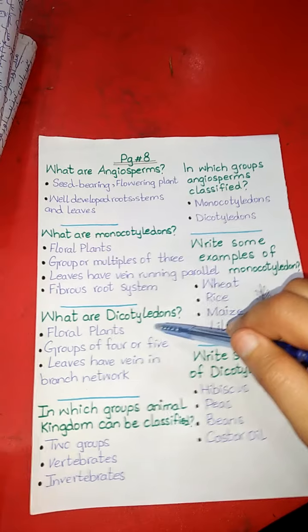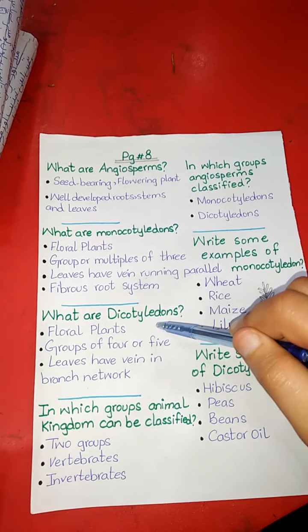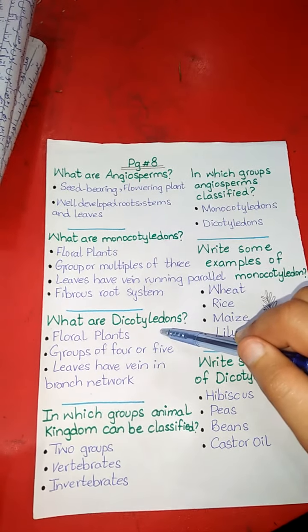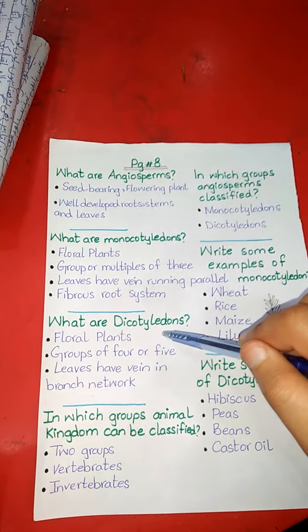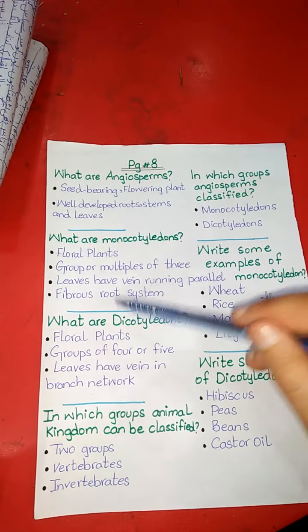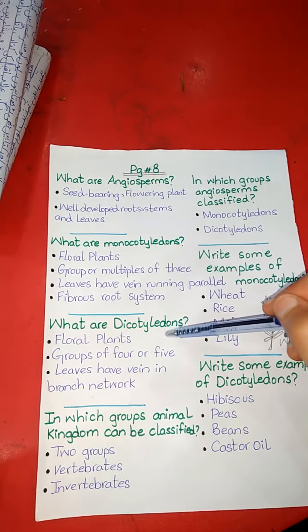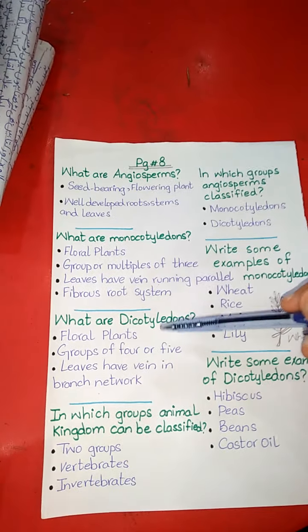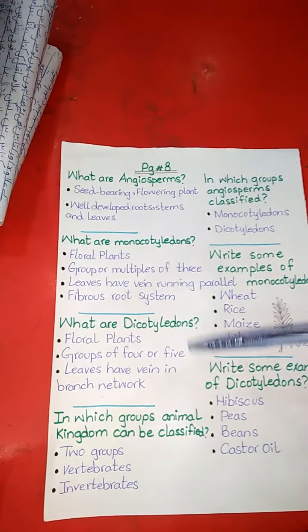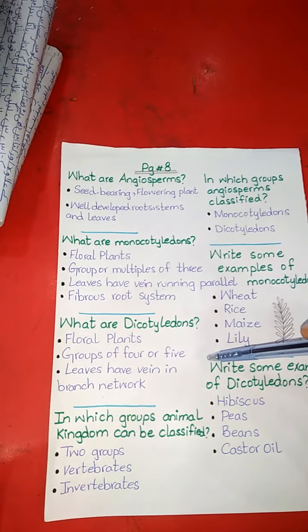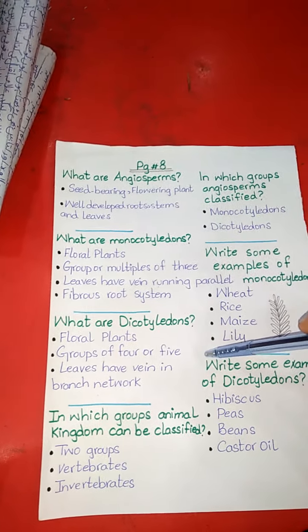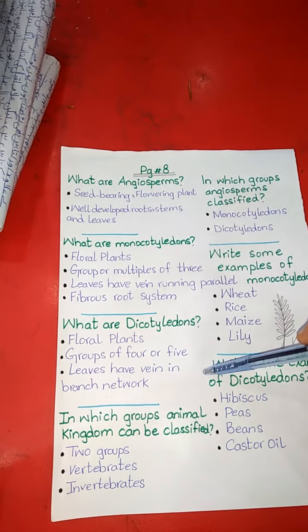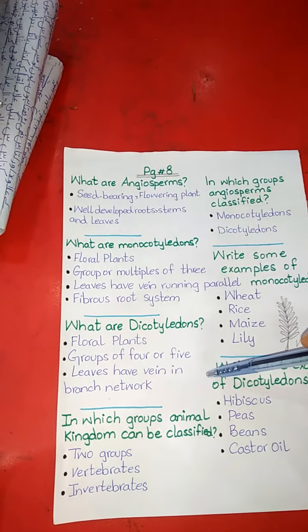What are dicotyledons? Dicotyledons kya hain? Dicotyledons are also floral plants like monocotyledons. They are arranged in groups of four or five. Their leaves have veins in a branch network.